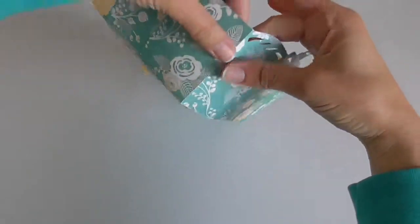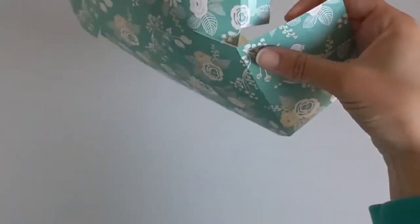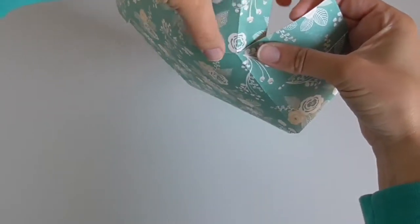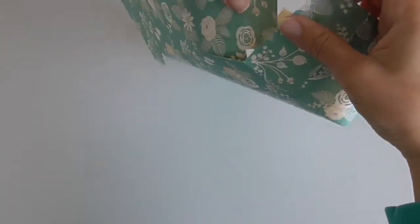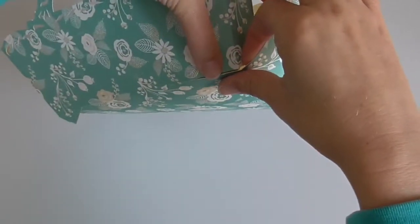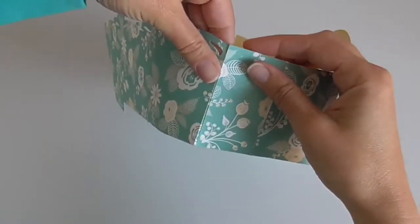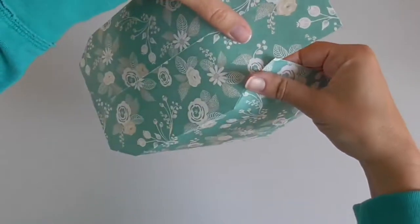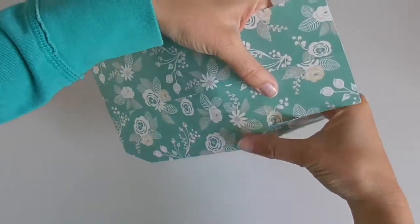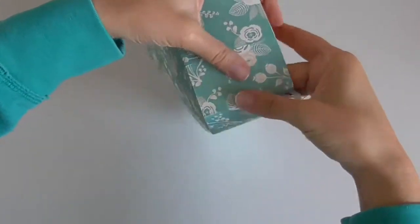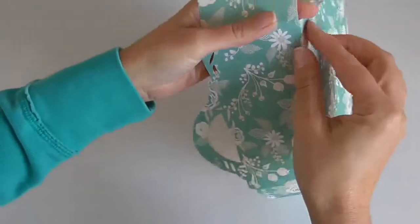And then I take that edge piece, the corner and the edge, line those up, smooth it down. And I just continue that all the way around. All four sides. And then this side. And the last side.